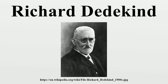Dedekind returned to Göttingen to teach as a private docent, giving courses on probability and geometry. He studied for a while with Peter Gustav Lejeune Dirichlet, and they became good friends. Because of lingering weaknesses in his mathematical knowledge, he studied elliptic and abelian functions. Yet he was also the first at Göttingen to lecture concerning Galois' theory. About this time, he became one of the first people to understand the importance of the notion of groups for algebra and arithmetic.